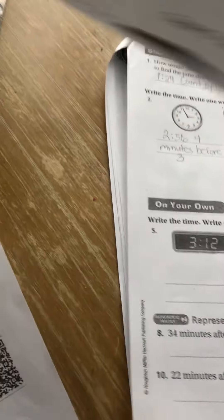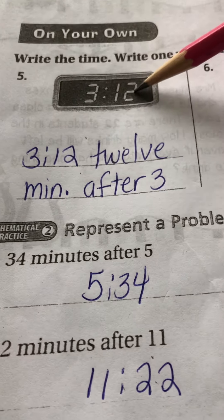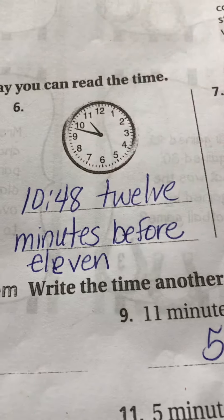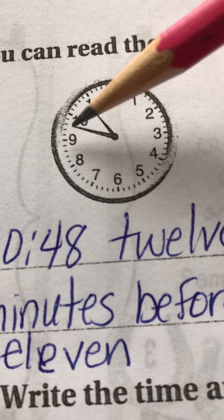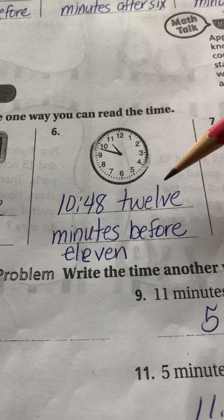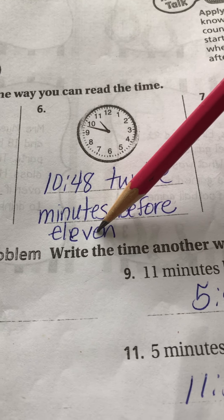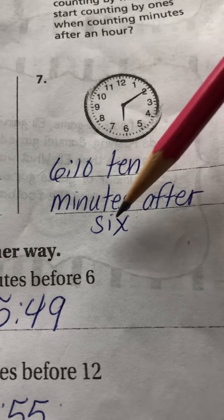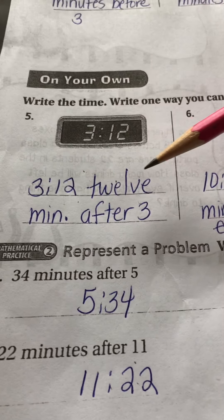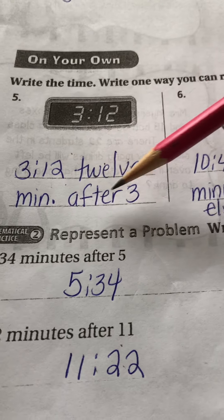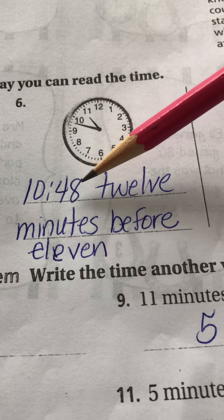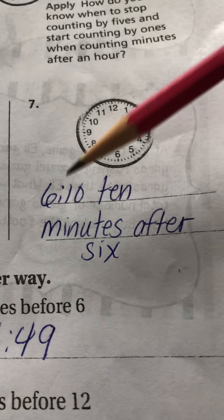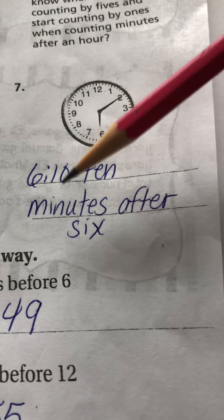All right, boys and girls, here are the answers to five, six, and seven. Number five: we know it's 3:12. Our answer is 12 minutes after three. Number six: we know it's 10:48. You're counting to the exact minute — the minute hand is on one of the minutes. Another way to write that would be 12 minutes before 11. Number seven: the answer is 6:10, or you could have written 10 minutes after six. Let me go back so you can write it down. Number five: 3:12, 12 minutes after three. Number six: 10:48, 12 minutes before 11. Number seven: 6:10 as a digital time, and 10 minutes after six.